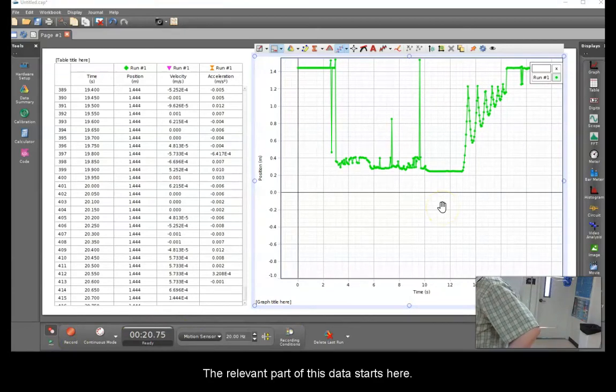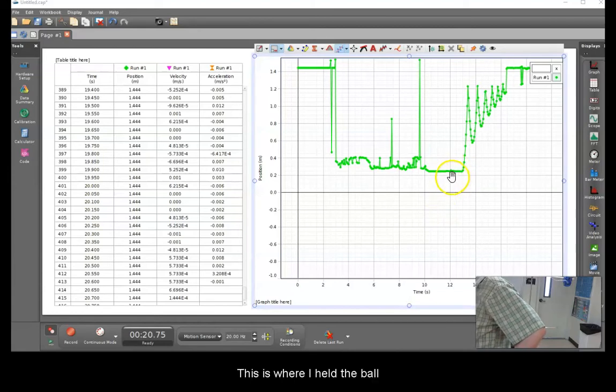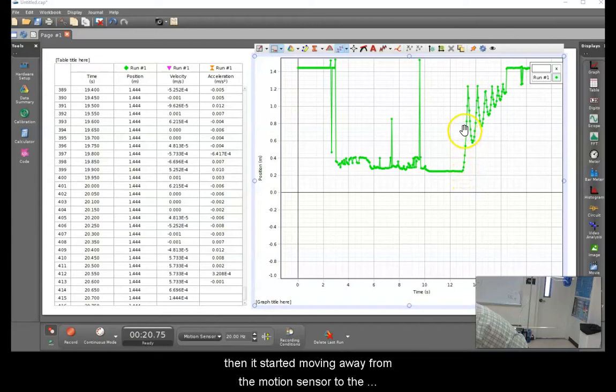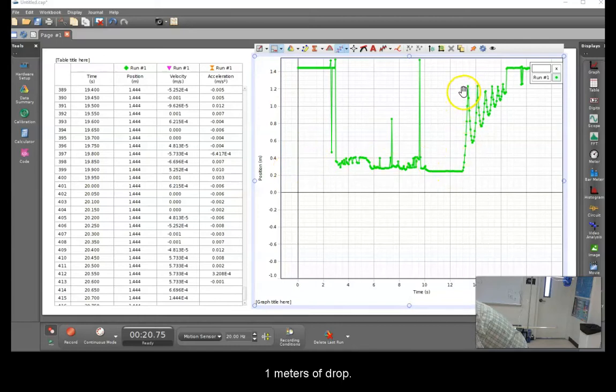The relevant part of this data starts here. This is where I held the ball at the drop height. Then, it started moving away from the motion sensor to the first bounce, approximately one meter of drop.